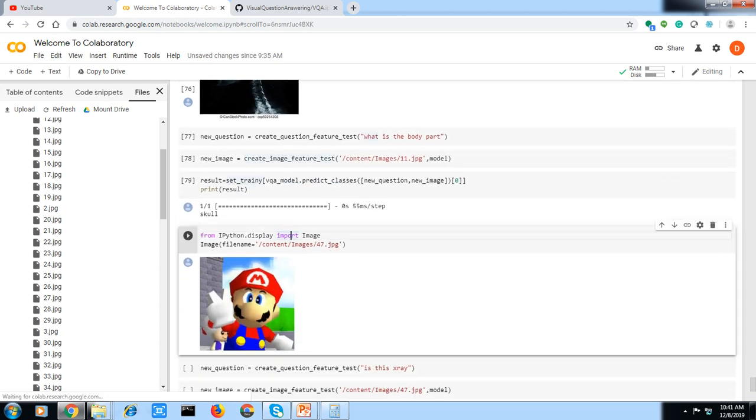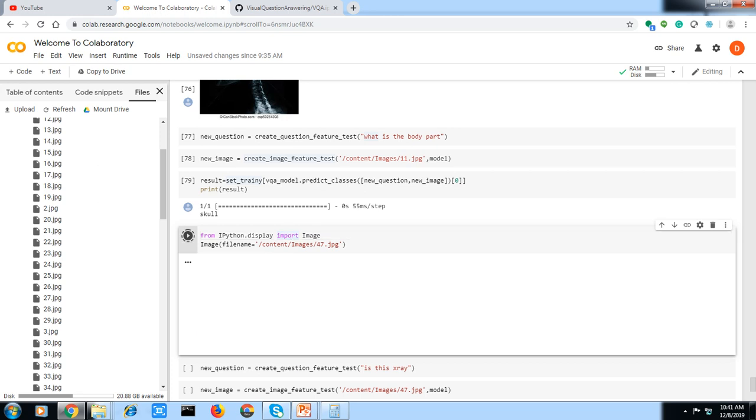There are times where a random image will be introduced to your model, and it shouldn't be giving an answer which is closely associated with an x-ray. For example, in this case, this is a Mario picture that I took from the internet, and it shouldn't be saying that this is an x-ray. Let's test that.